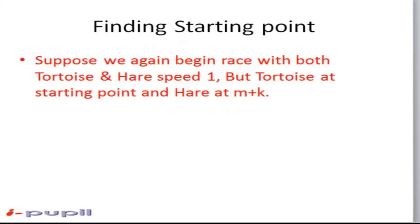Next we find the starting point of the loop. Now suppose we again begin the race with both tortoise and hare at speed 1, but the tortoise is standing at the starting point and hare at m plus k point, that is the meeting point. Now let them both run at the speed of one step.